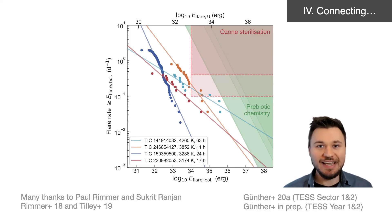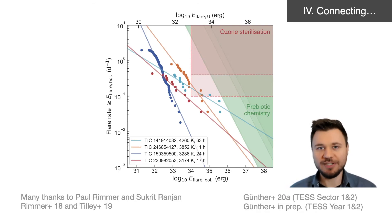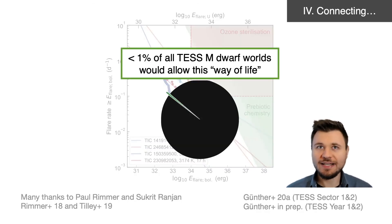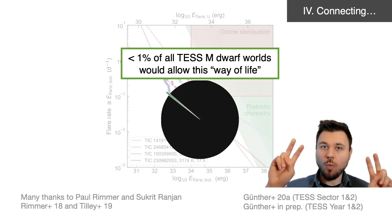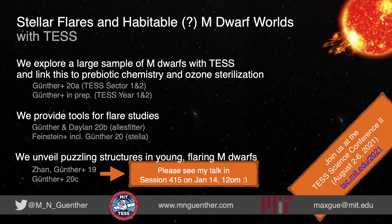What really fascinates me is the interplay between three, four, five different disciplines all working together on a multidisciplinary problem, allowing us one more step toward solving questions of habitability on exoplanets. In total, we find that a little less than 1% of all TESS M-dwarf worlds would allow this particular pathway of life. I thank you for taking the time to look at this presentation. Please come see my talk in session 415 on January 14th at 12 p.m. to learn about puzzling structures we unveiled in particularly young flaring M-dwarfs, and please join us at the TESS Science Conference number 2 in August. Thank you very much for your attention and enjoy the rest of AAS.